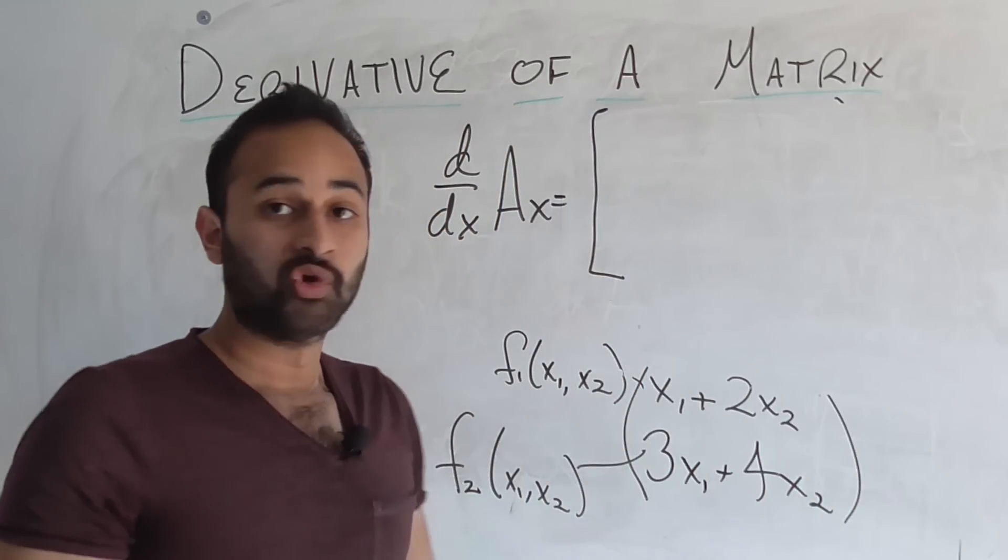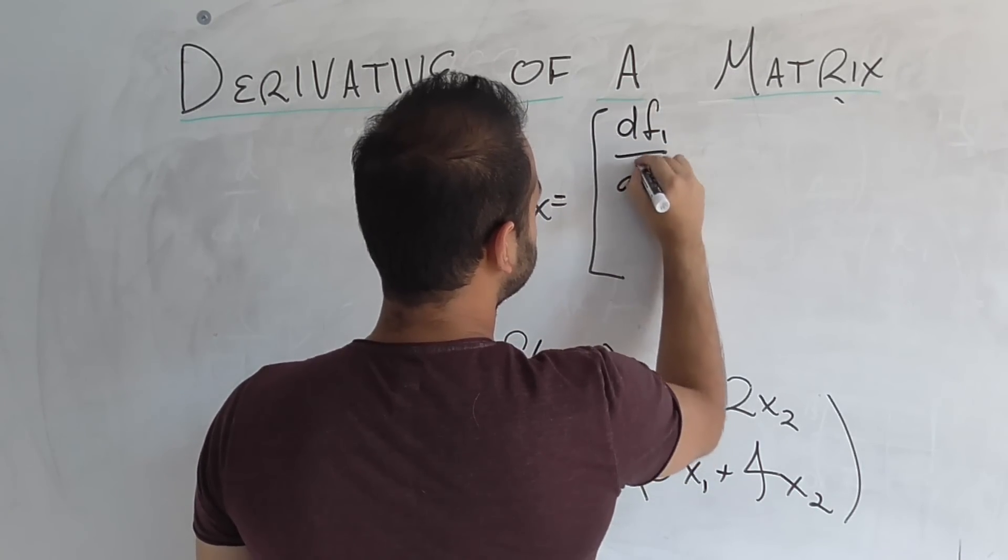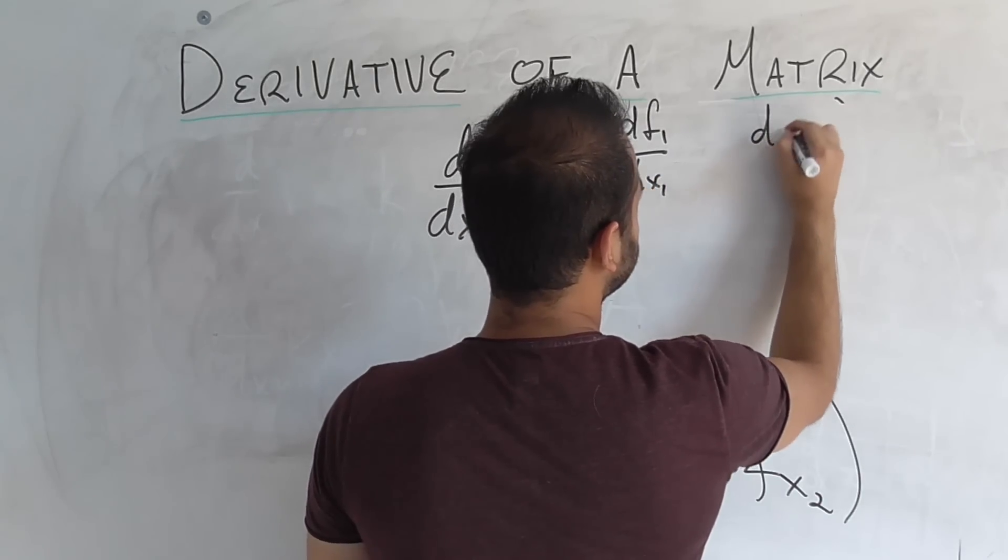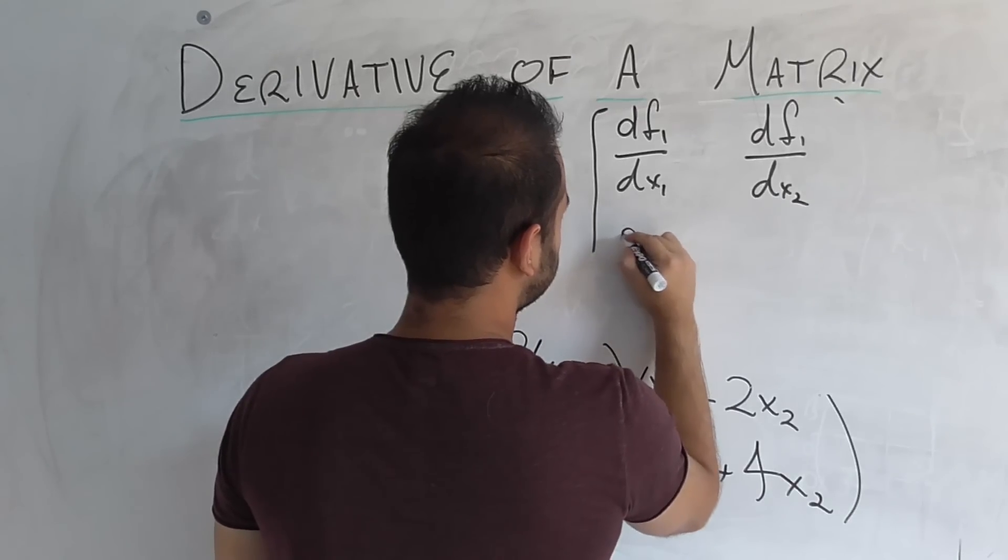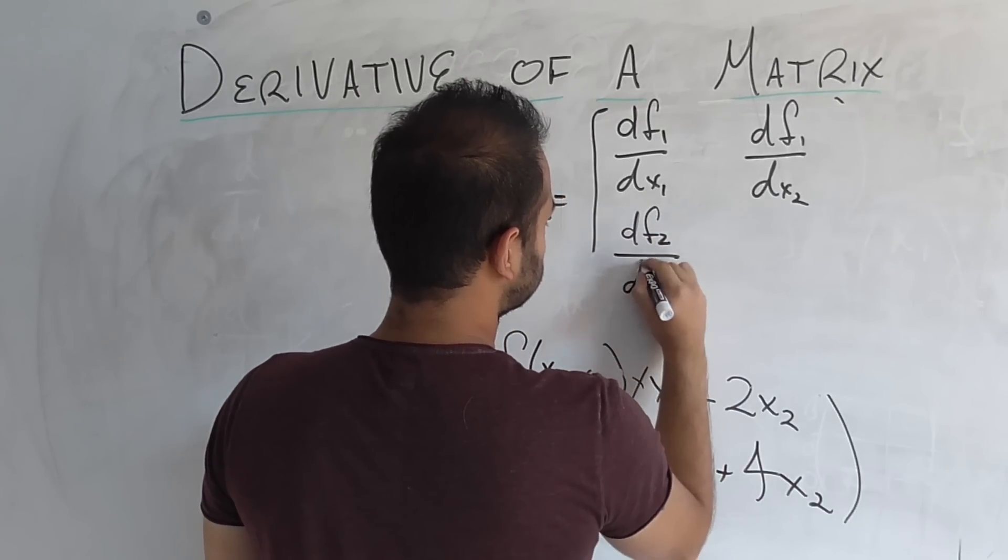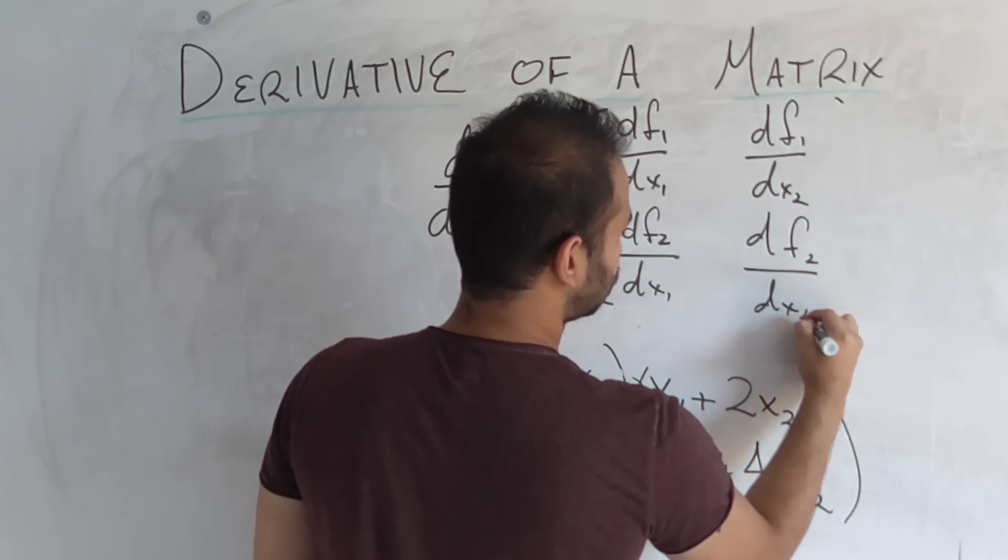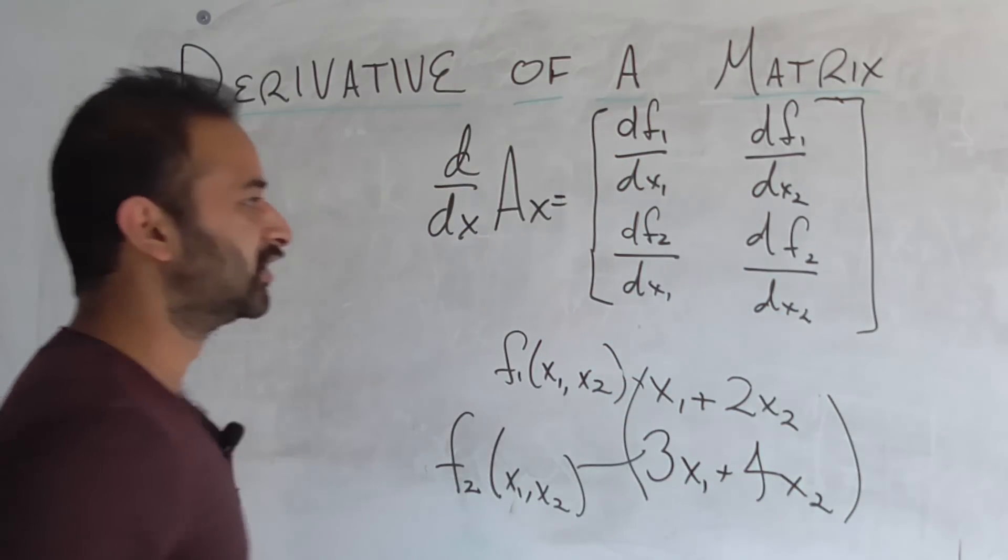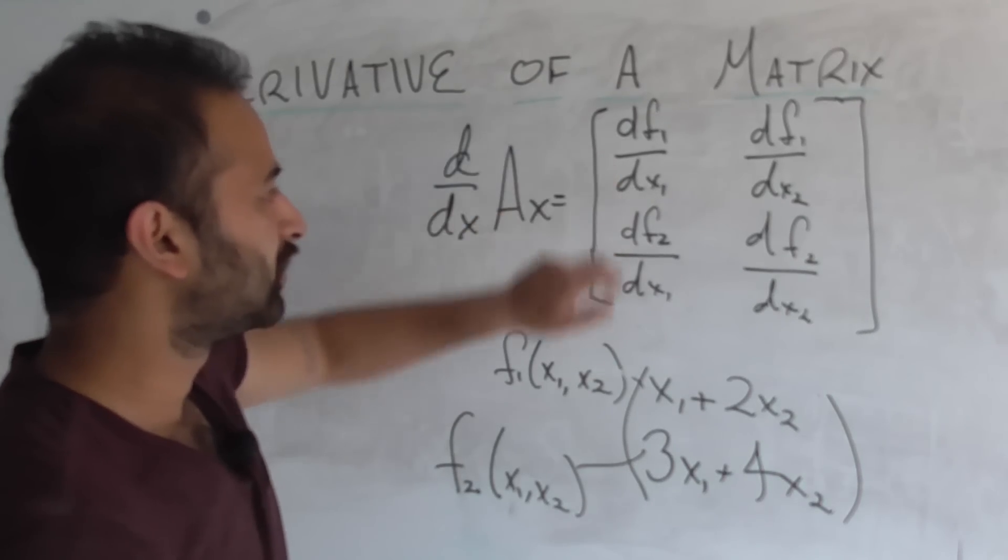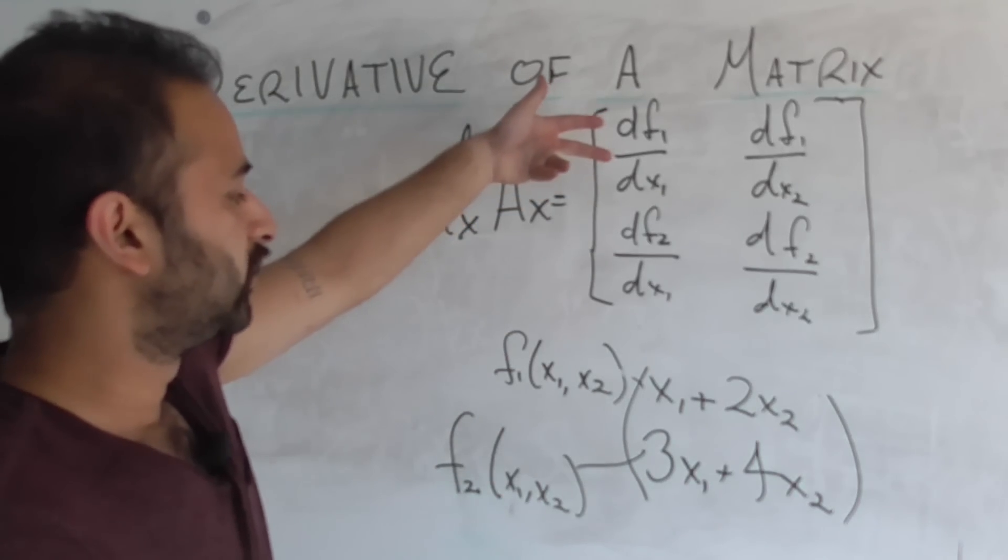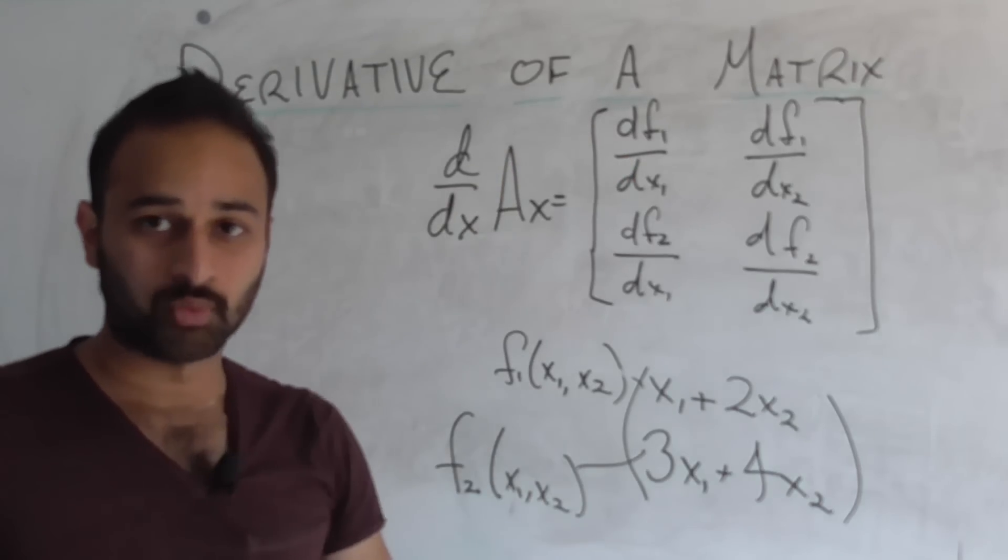So I'm going to enumerate them out and then describe them. So we have df1/dx1, we have df1/dx2, then we have df2/dx1, and lastly we have df2/dx2. So that's a lot of derivatives, but we know how to take each of these. For example, let's look at the first one. The first one just says, what's the derivative of function f1, which is this guy, with respect to x1?